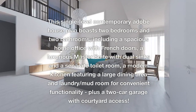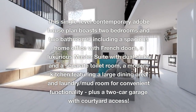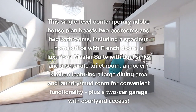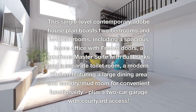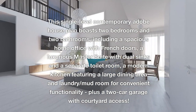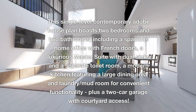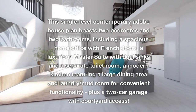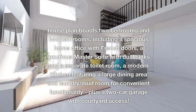This single-level contemporary adobe house plan boasts two bedrooms and two bathrooms, including a spacious home office with French doors, a luxurious master suite with dual sinks and a separate toilet room, a modern kitchen featuring a large dining area and laundry, a mudroom for convenient functionality, plus a two-car garage with courtyard access.